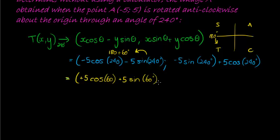Then for the second part of the coordinate, we see the same thing. Sine had a negative come out, so that would become positive 5 sine 60, and cos had a negative come out, so that is negative 5 cos 60.